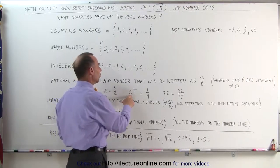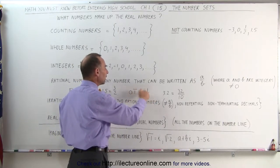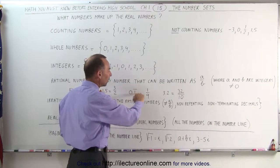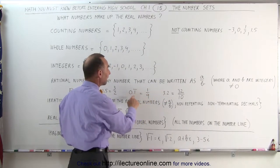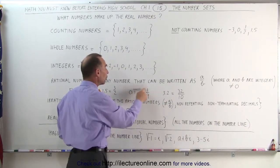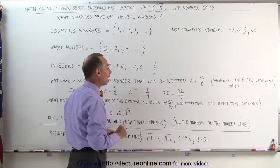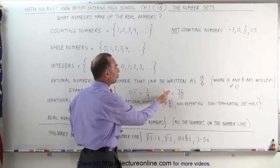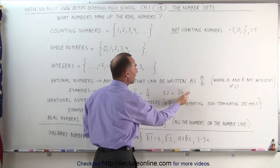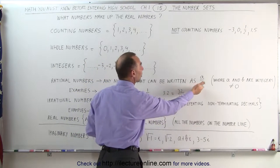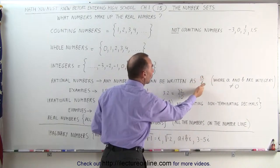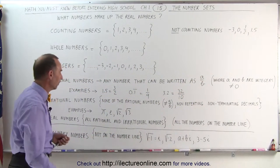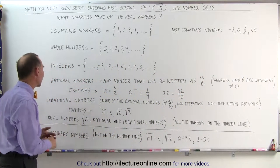Even the number 0.11111 out to infinity — this little line means the 1 repeats out to infinity — can be written as 1/9, so this is considered a rational number. And 3.2 can be written as 32/10. Again, since it can be written in this form, it is considered to be a rational number.